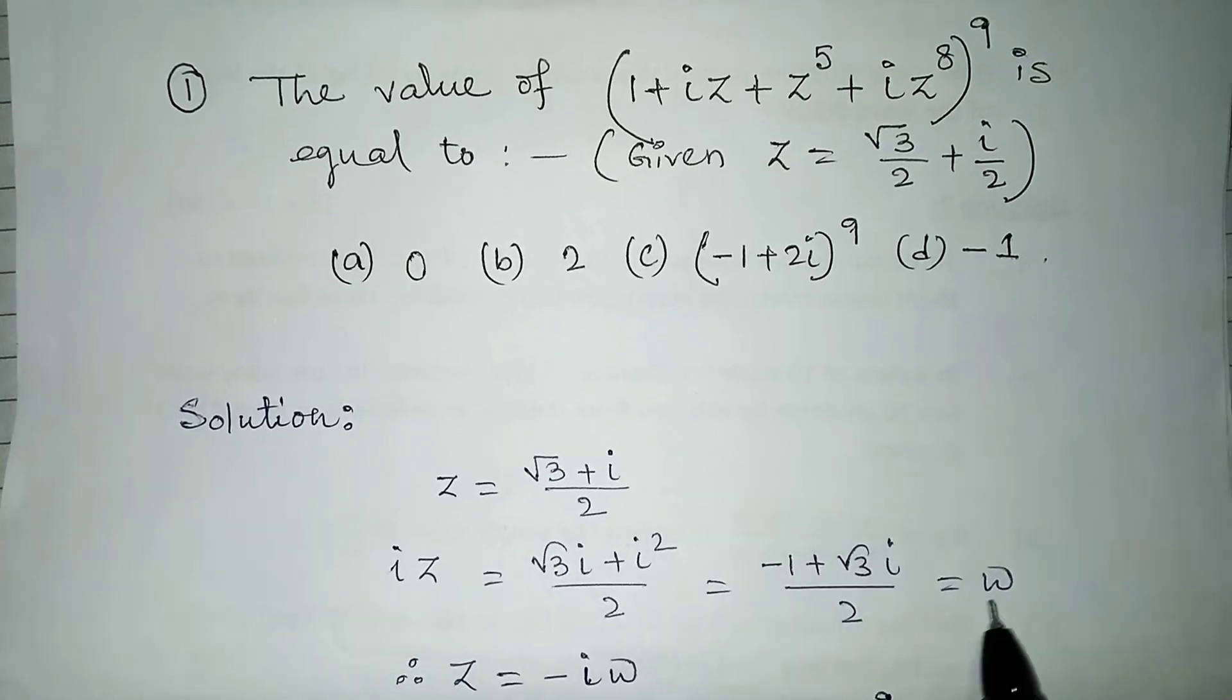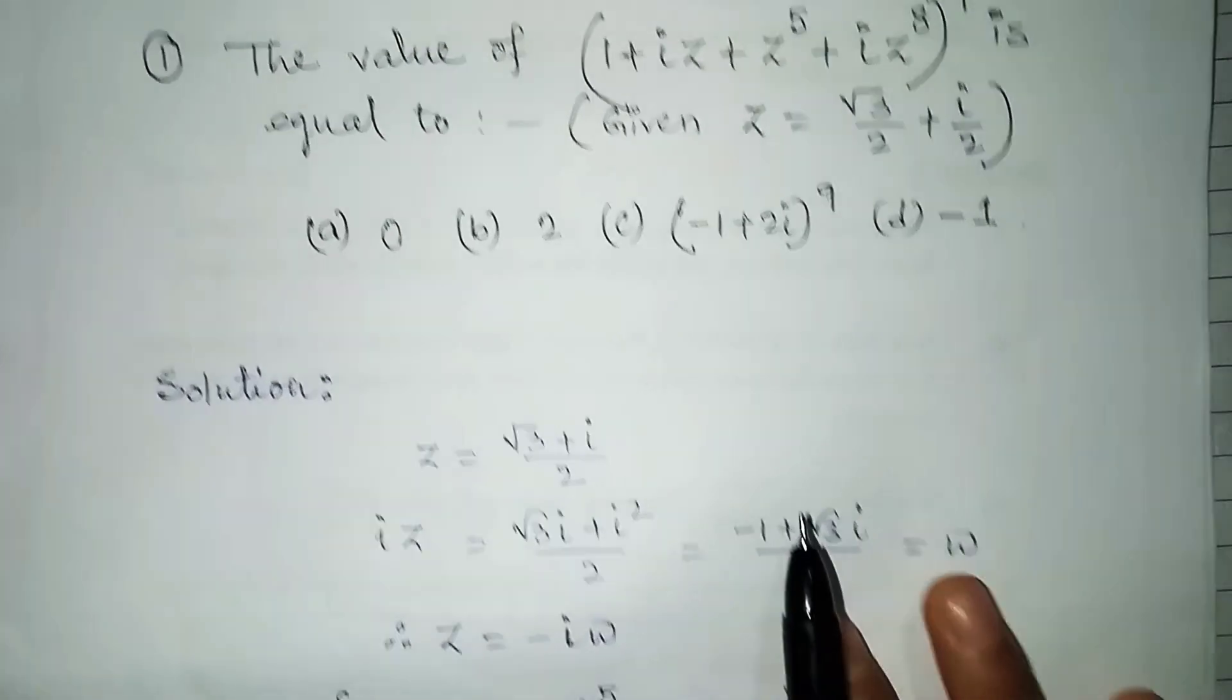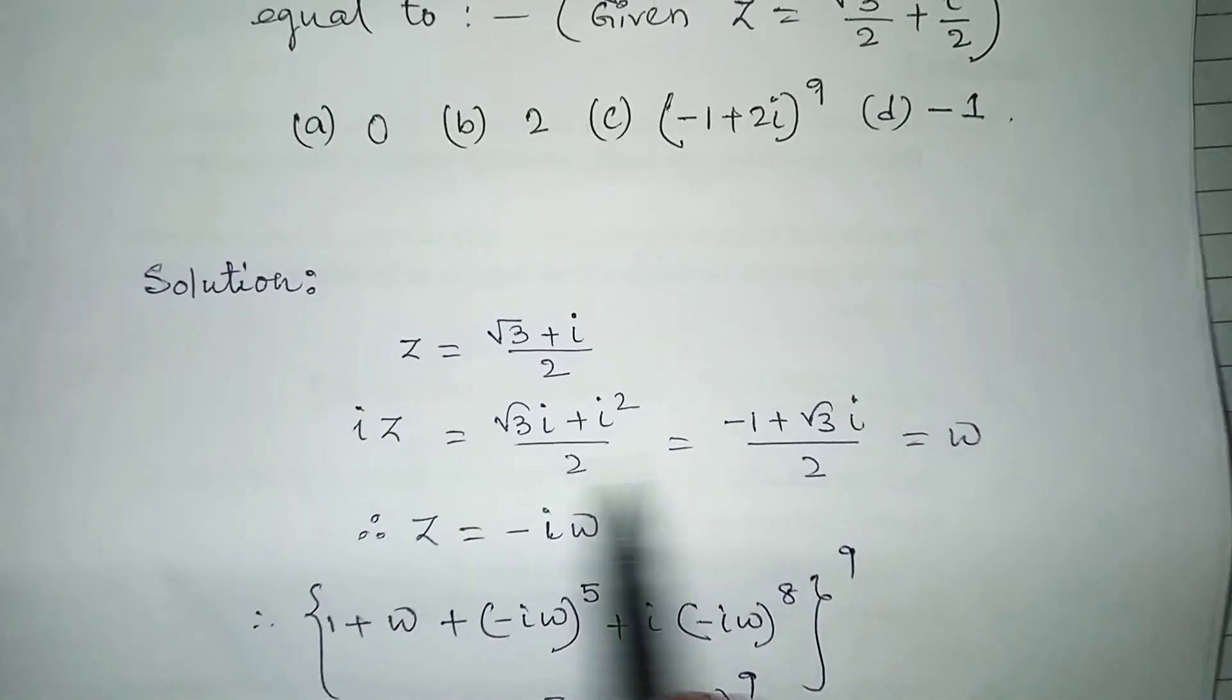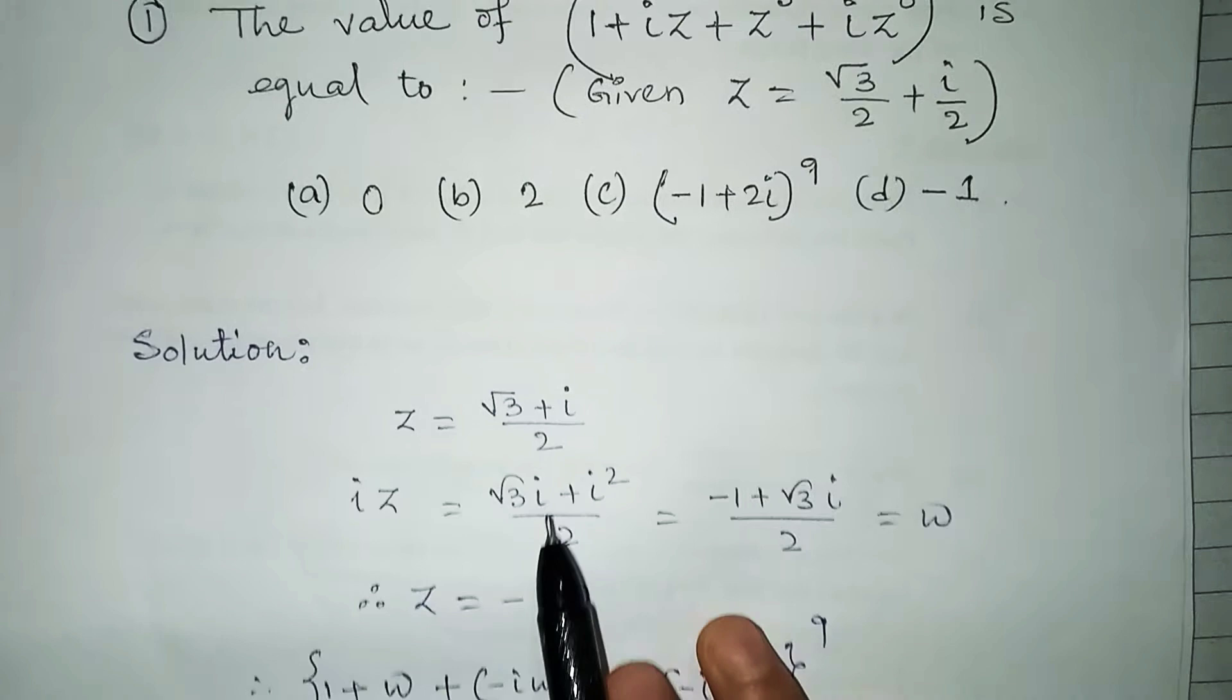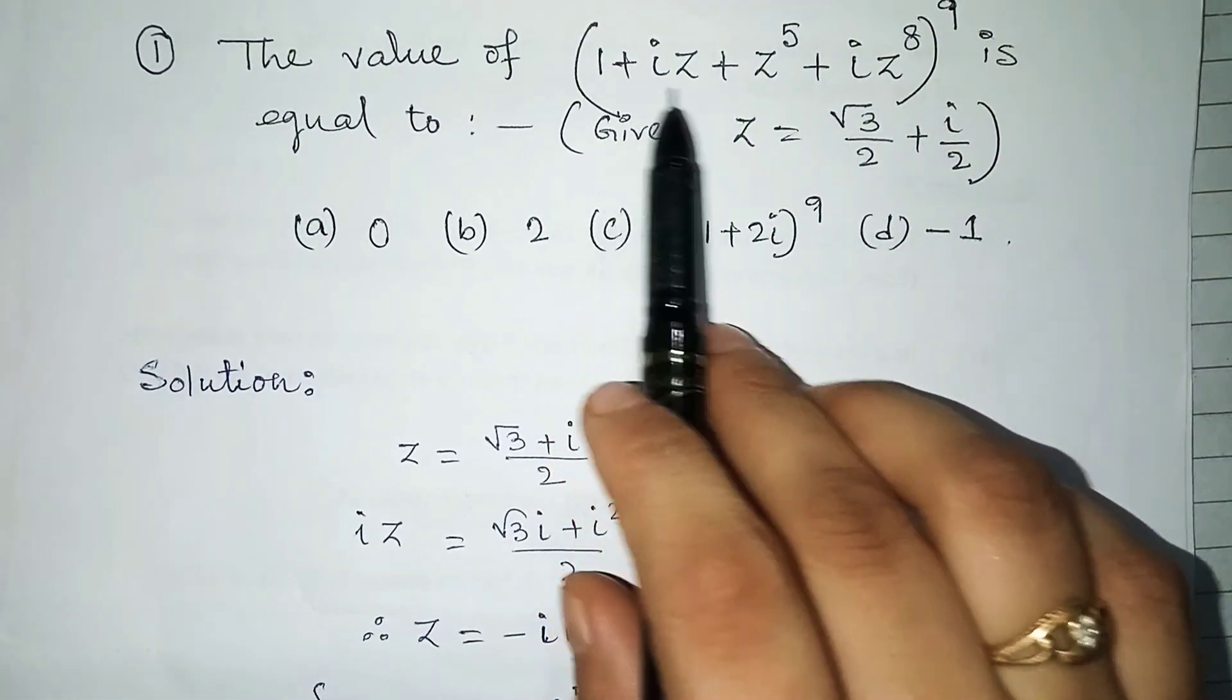If you do root three i plus i square by two, which is minus one plus root three i by two, which is omega. So z is, you can see here, if z is omega, then iz equals minus i omega.